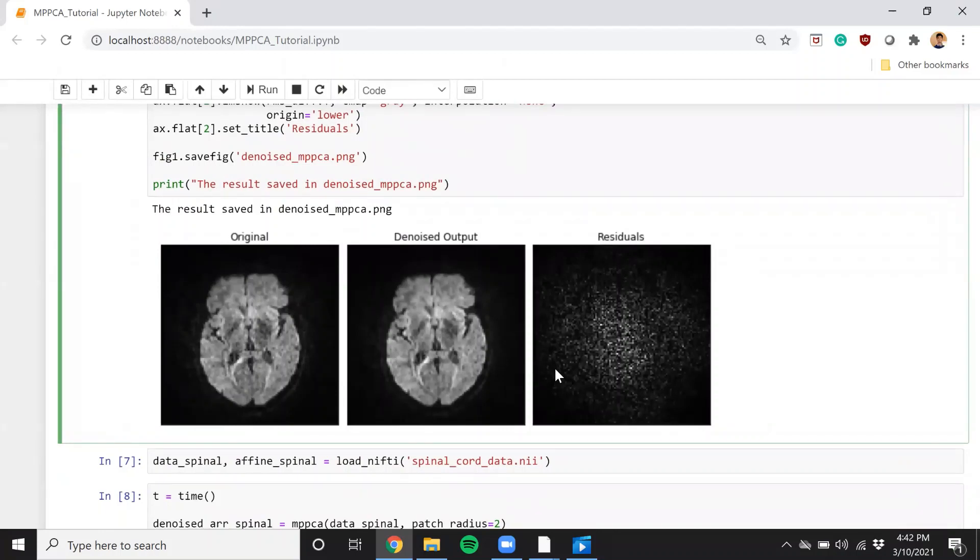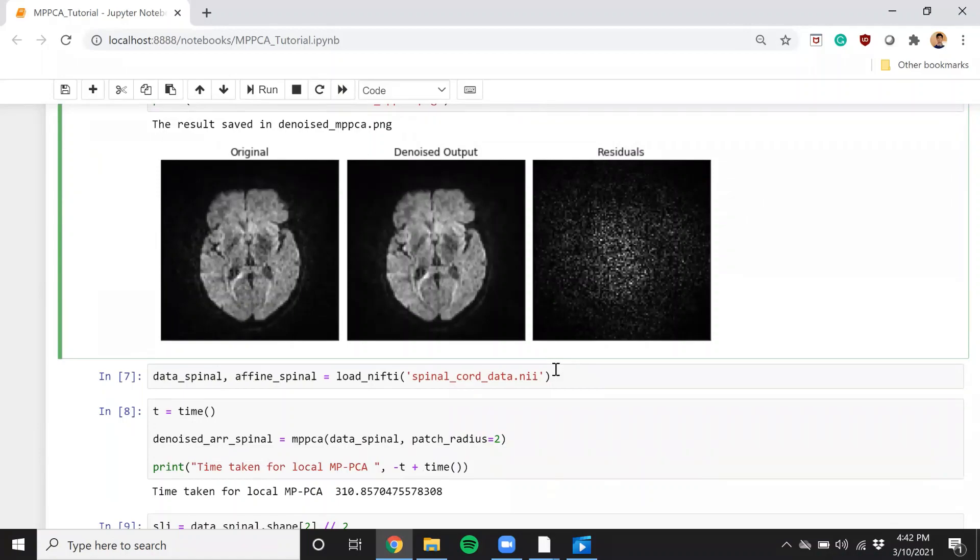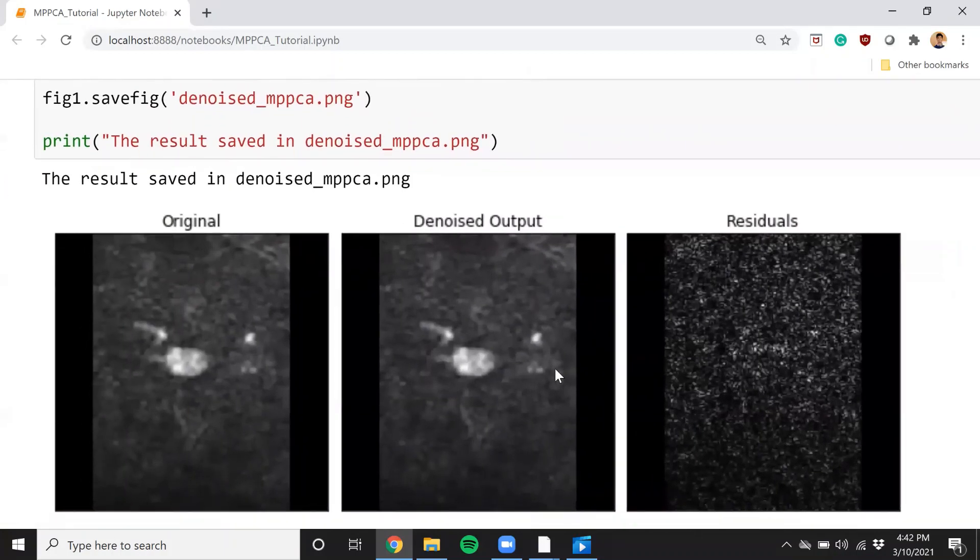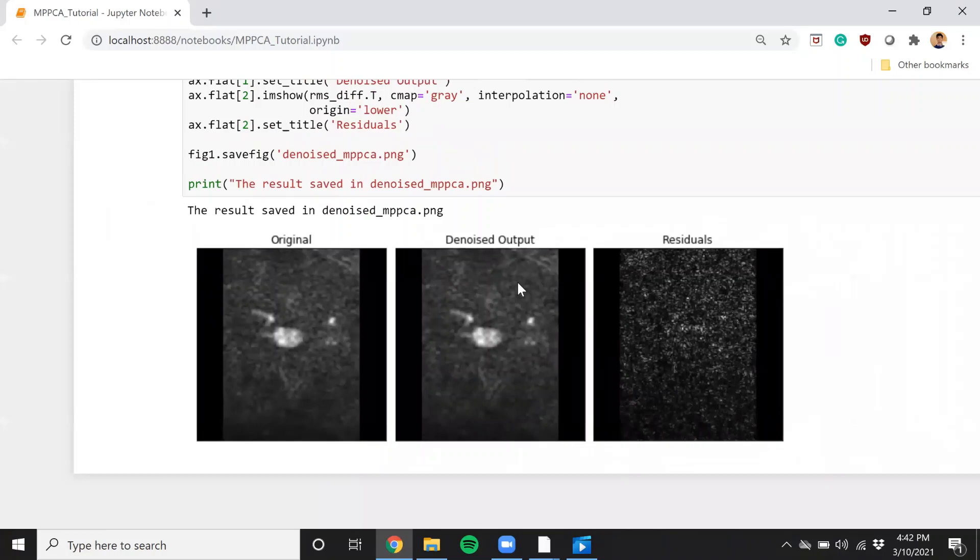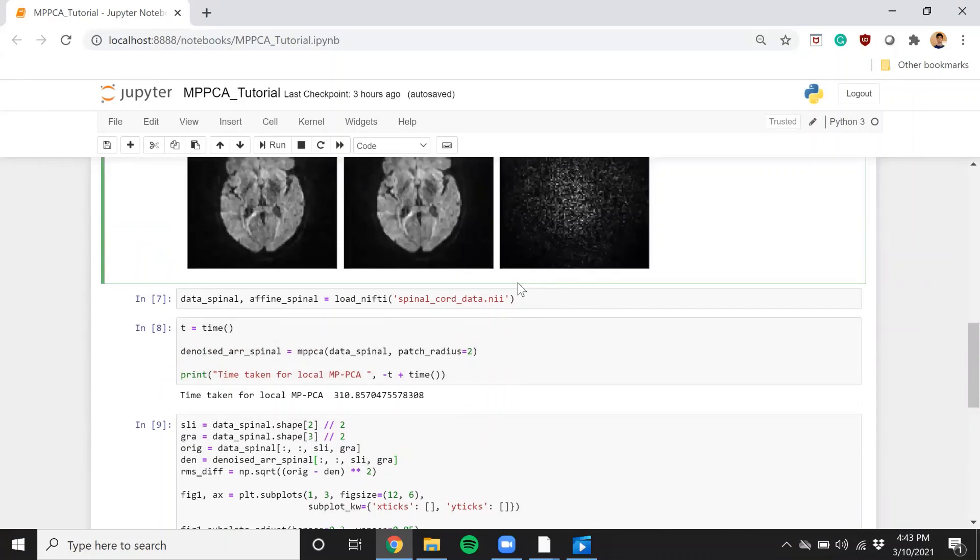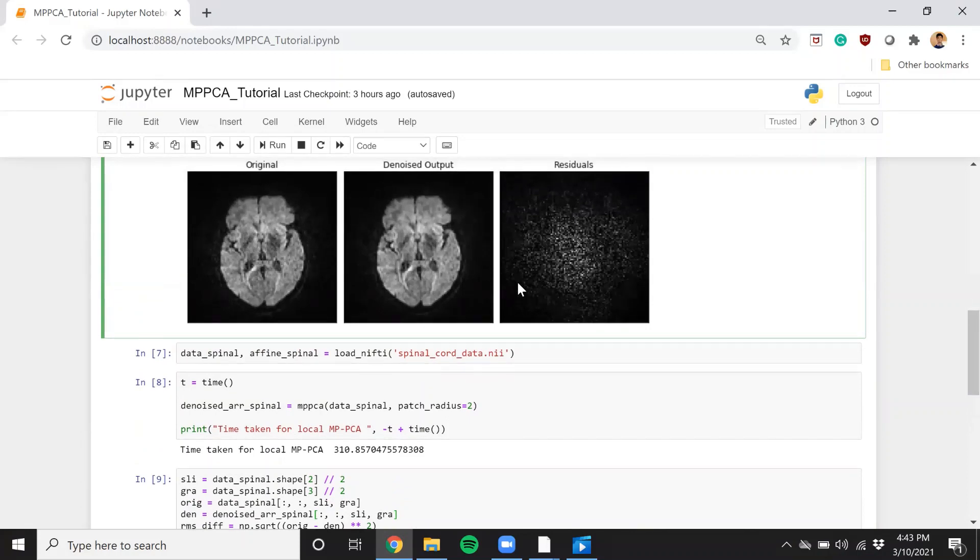As mentioned earlier, estimating the rank of SVD is in itself a hard problem. Sometimes the assumption may not hold. And let's take a look at the spinal cord data. The issue here is that the number of volumes for the spinal cord is really less. And therefore, the noise removed is also not that good. It does not give too much of a denoising performance. This is one limitation of the MPPCA or in general, the PCA setting that if the number of gradient directions, that is something along the fourth dimension, is too big, then the PCA becomes ill-conditioned. Or if it is too small, then estimating the rank of that local SVD is quite hard. And you may not get good denoising performance.